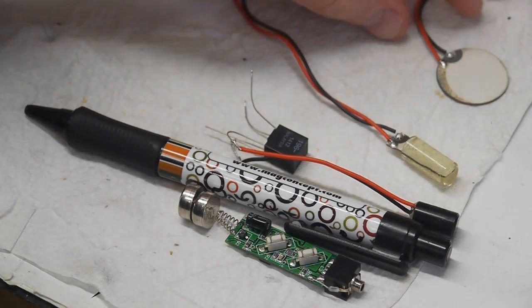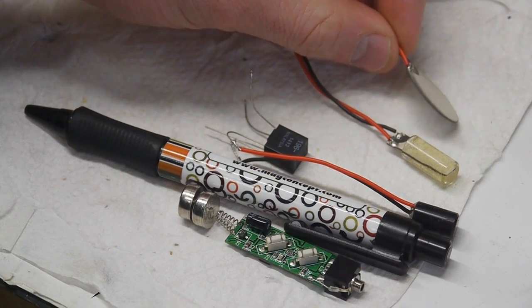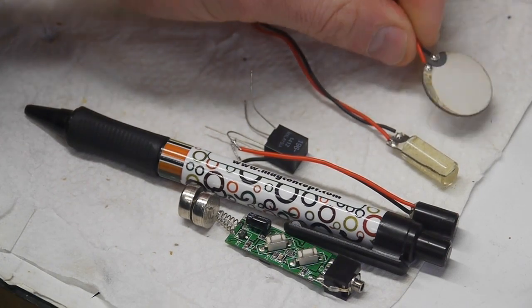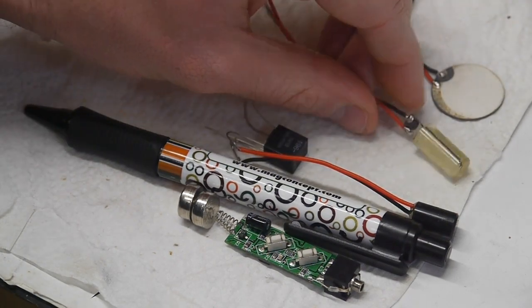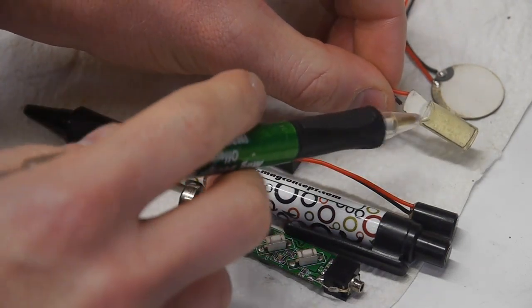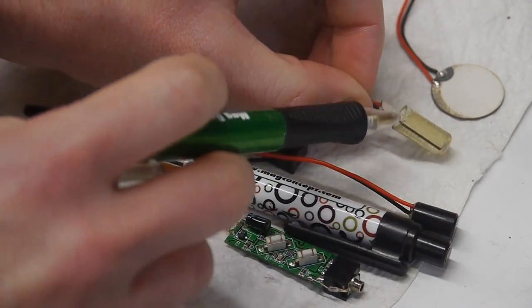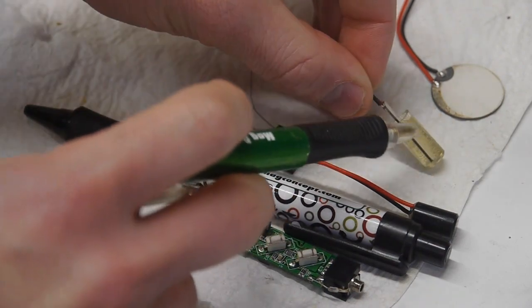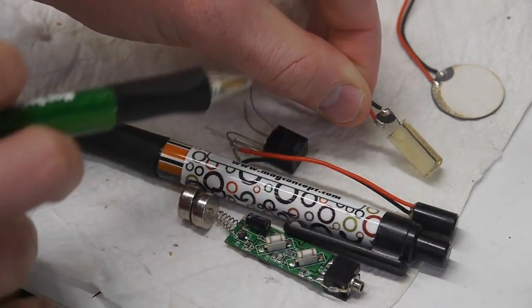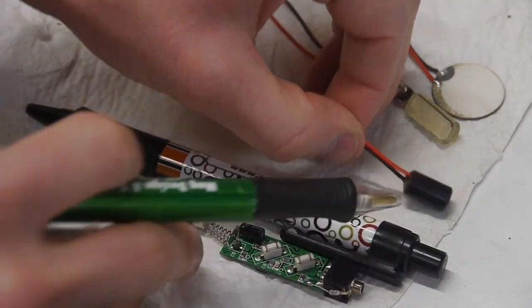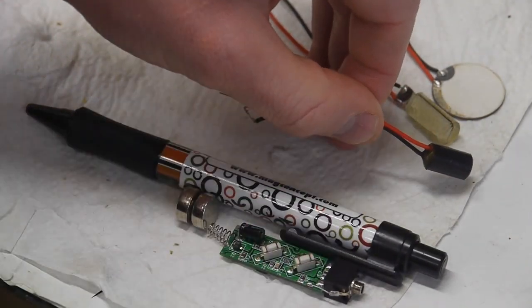I built this bone conduction speaker by taking a piezo transducer disc like this and cutting it into a strip and then putting the strip into the back part of this ballpoint pen, the button of the ballpoint pen, and encasing it in epoxy. So I basically put the strip in here and then filled this up with two-part epoxy and let it cure and that's how this one is built.